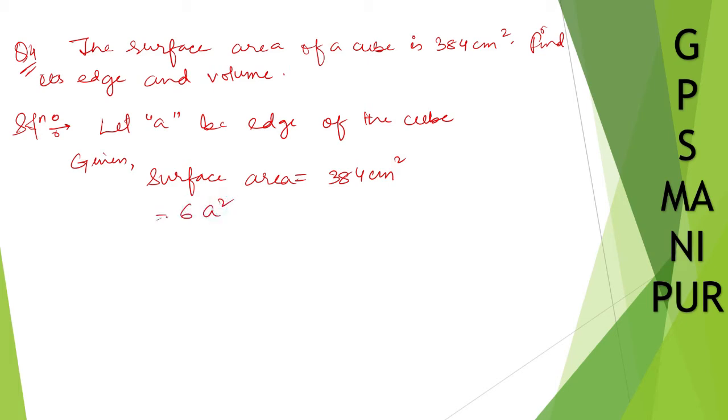6a² = 384 centimeter square. So a² = 384 divided by 6, which equals 64. Now when we take the square root, a = √64.